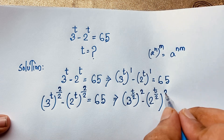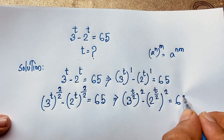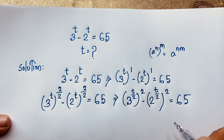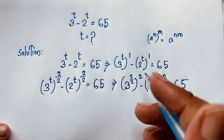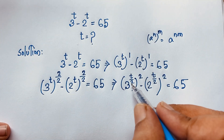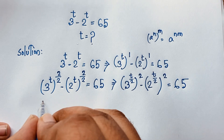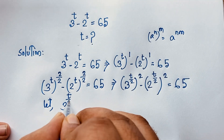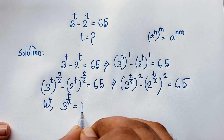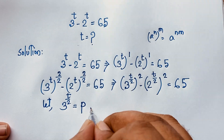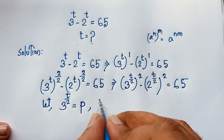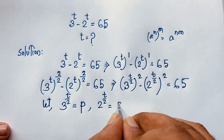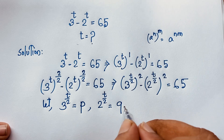Because I want to apply the formula a squared minus b squared, I make a substitution. Let 3 to the power t over 2 equal p, and let 2 to the power t over 2 equal q.